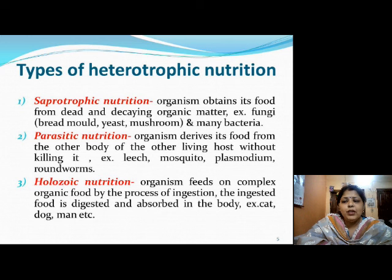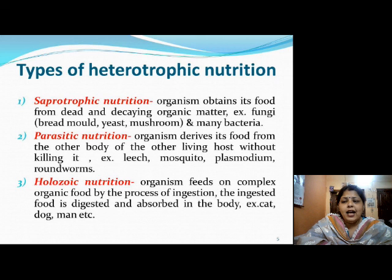Then comes holozoic nutrition — organisms which feed on complex organic food by the process of ingestion. The ingested food is digested and absorbed in the body. Examples are cat, dog, and man. The most common example is man — we eat the food as a whole and then digest it. This kind of nutrition is holozoic nutrition.